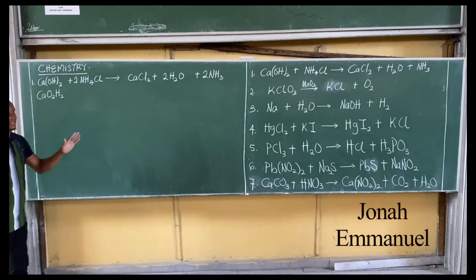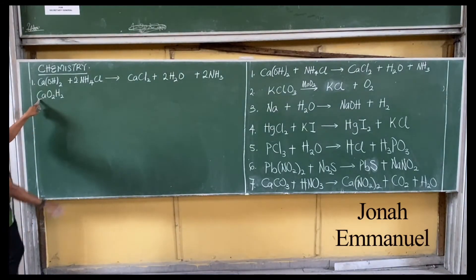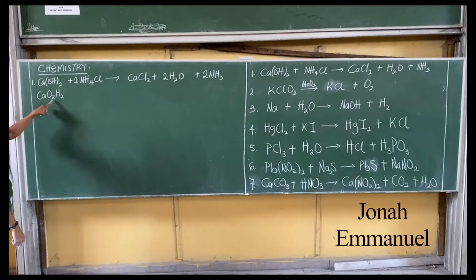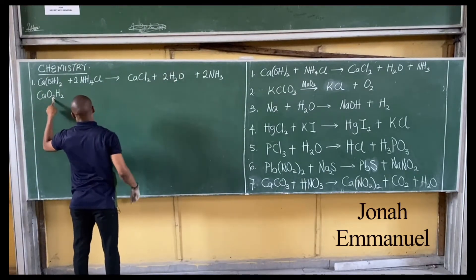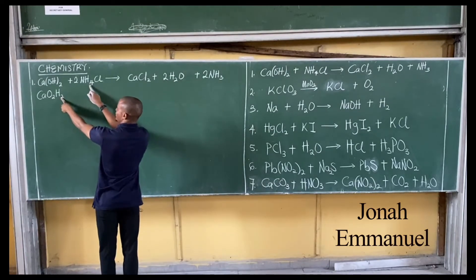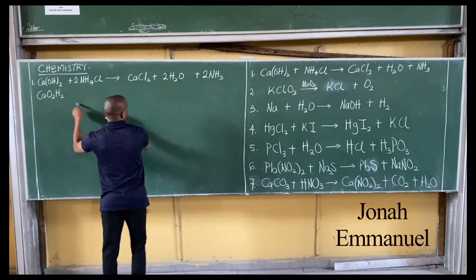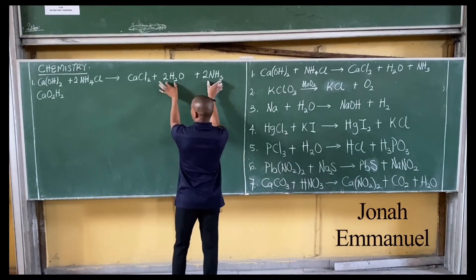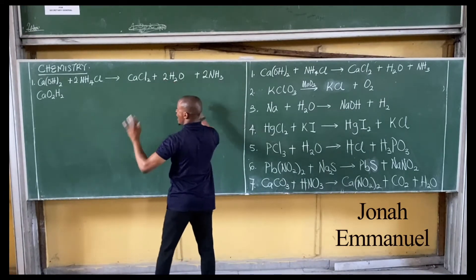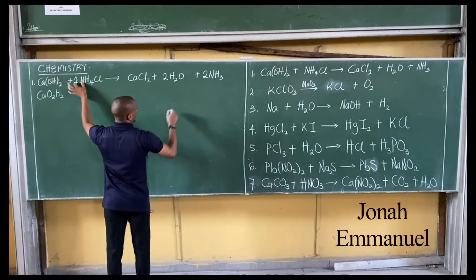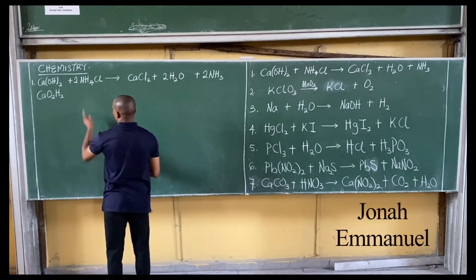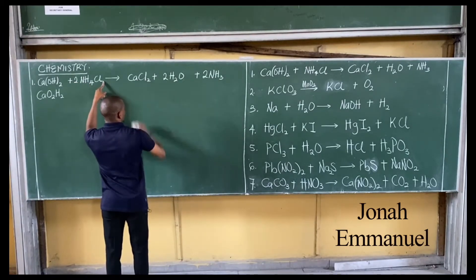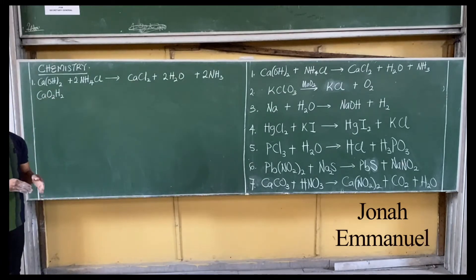Now check it again. Look at nitrogen - two here, two here, two here. Go back to hydrogen. I have two here, two times four is eight. Eight plus two is ten. Come here, two times two is four, plus two times three is six. Four plus six is ten. It's now balanced. Number one is balanced.